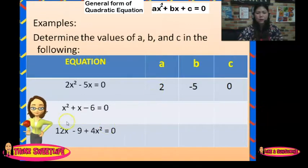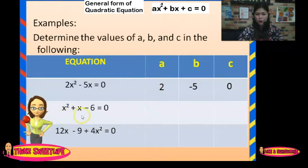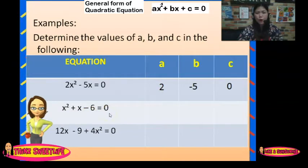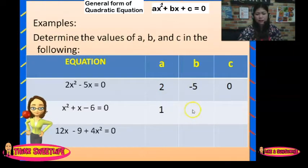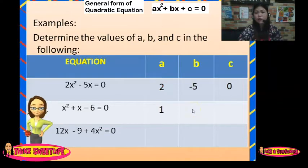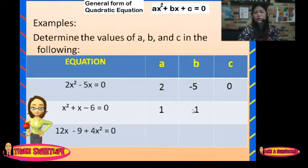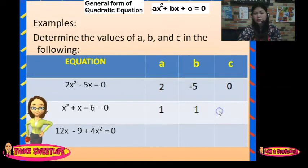How about the second equation? We have x squared plus x minus 6 equals 0. The A here is 1. The numerical coefficient of X is also 1, so B is 1. And the constant is negative 6, so C is negative 6.